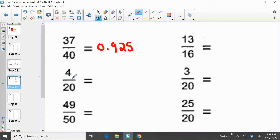Going down, four over twenty, four twentieths. Four divided by twenty equals zero point two. Four divided by twenty.